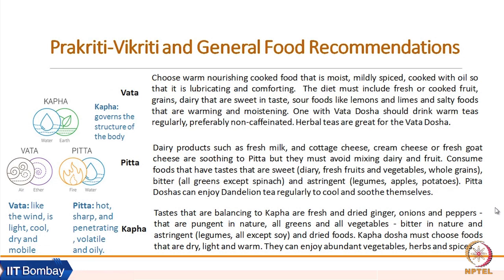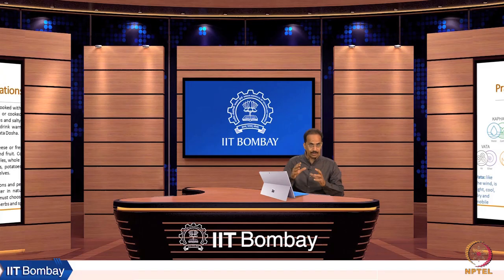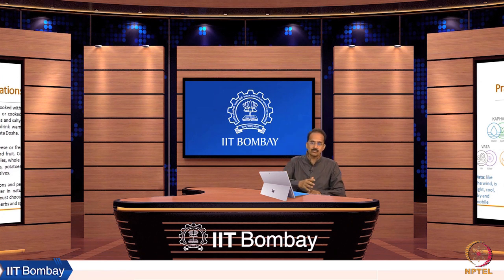People with pitta dosha need dairy products such as fresh milk, cottage cheese, cream cheese, or fresh goat cheese, which are soothing to pitta — but they must avoid mixing dairy and fruit. Pitta predominant people should consume foods that are sweet in taste: dairy, fresh fruit, vegetables, whole grains, naturally sweet foods (not refined sugar), bitter greens except spinach, astringent legumes, apples, and potatoes. Pitta dosha people can enjoy dandelion tea regularly to cool and soothe themselves.